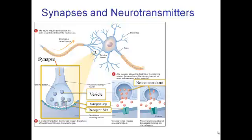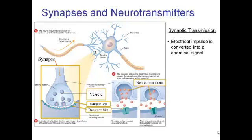The receptor is built to respond to a particular kind of neurotransmitter, so receptors are built to receive only some chemicals and not others. With synaptic transmission, the electrical impulse of the action potential is converted into a chemical signal that is sent from one cell to the next.